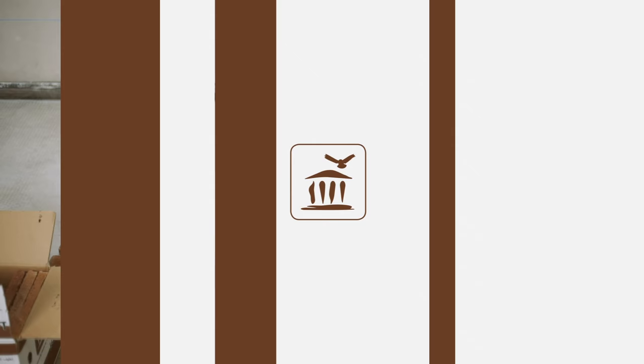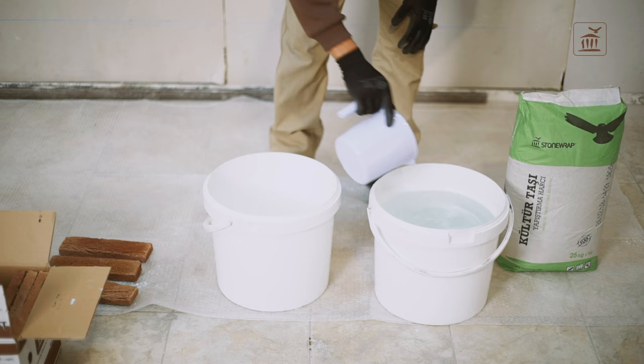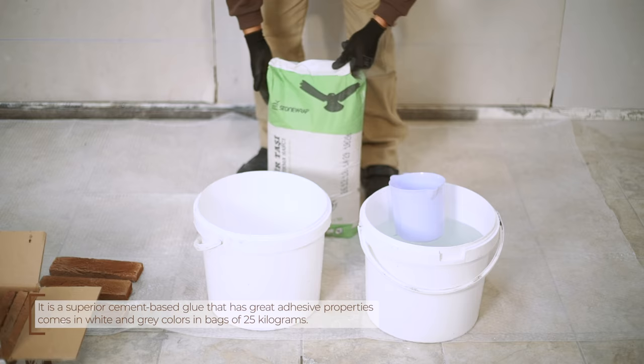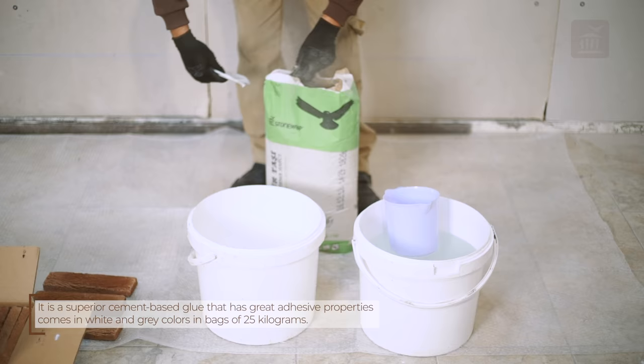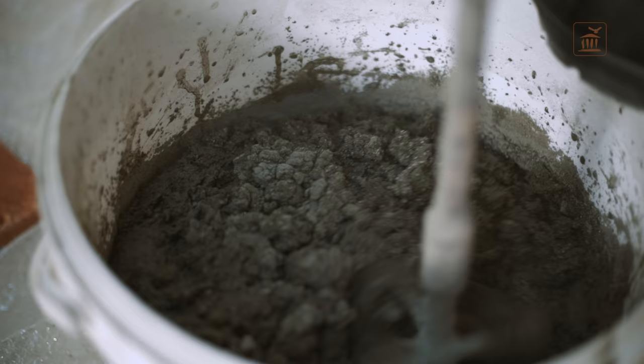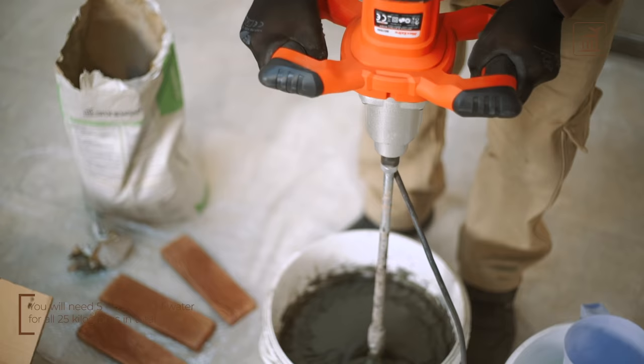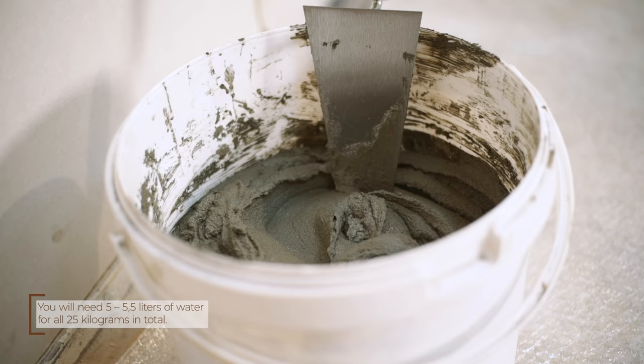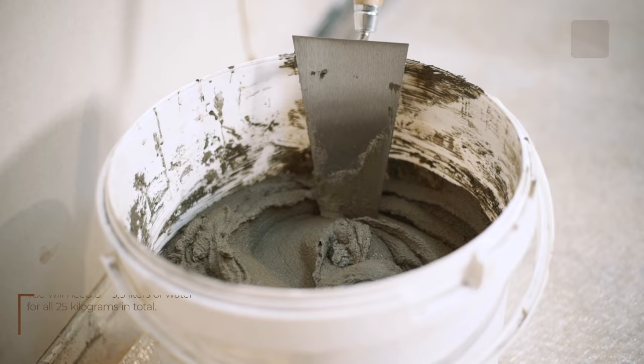After this step, start the preparation of stone wrap glue. The glue is specially designed for stone wrap brick and stone veneer. Pour the stone wrap glue into a bucket containing four to five liters of water and start mixing slowly until a homogeneous mixture is obtained.